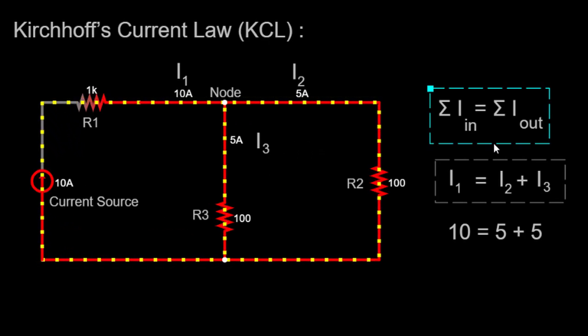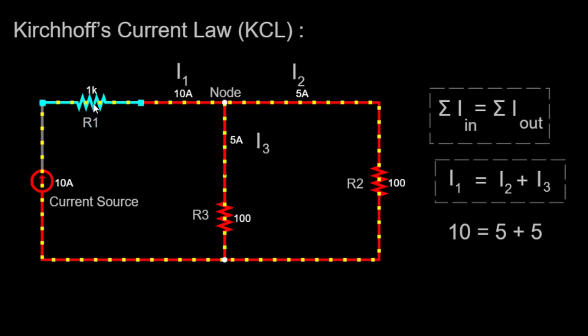To gain a better understanding of Kirchhoff's Current Law, let's examine the specific circuit configuration using our circuit simulator. In this setup, we have a 10-ampere current source connected to a resistor, denoted as R1, which has a value of 1 kilohm.